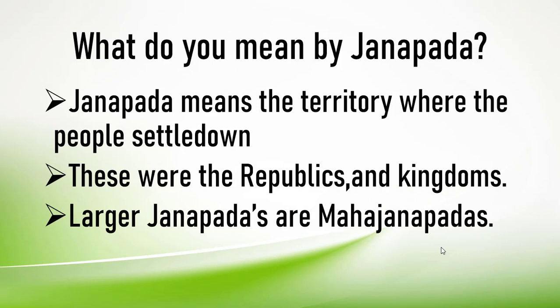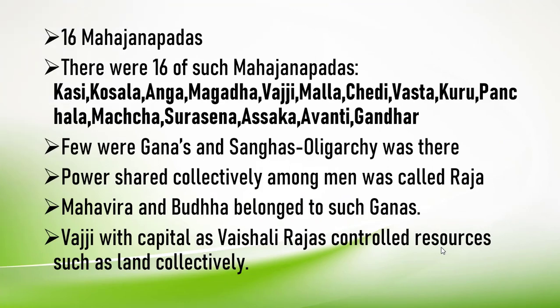What do you mean by Janapada? The early empires that emerged — unhe Janapadas and Mahajanapadas kaha jata tha. Janapada means the territory where the people settled down — the area where people lived well. These were republics and kingdoms. Larger Janapadas were called Mahajanapadas. There were 16 Mahajanapadas, and their names are written here.